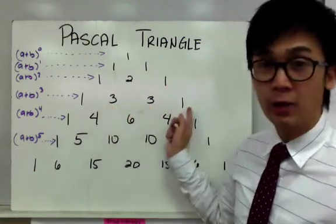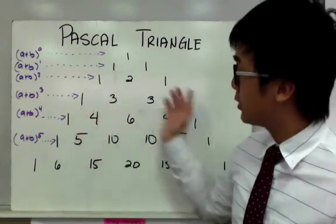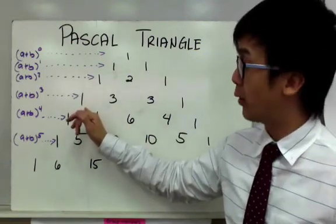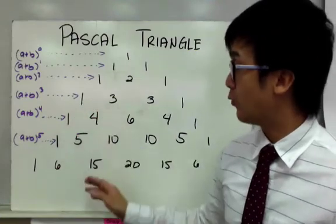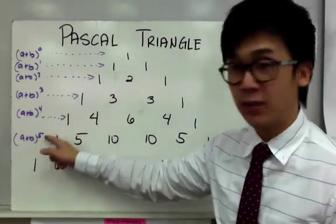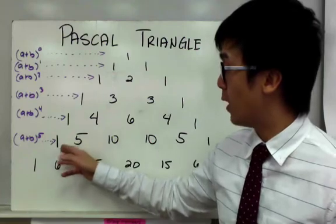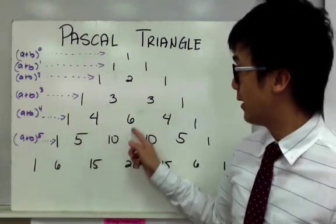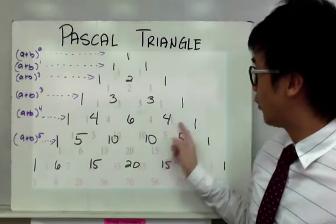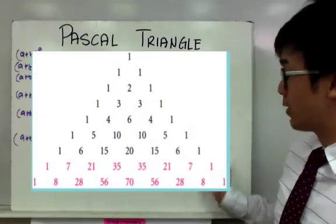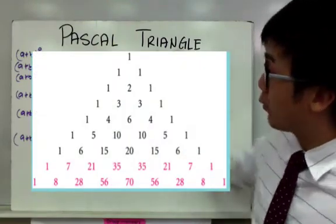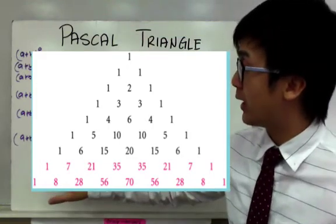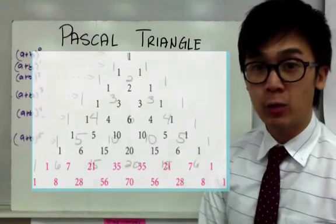So we have 1, 3, 3, and 1 — these numbers will be the numerical values that we multiply to our coefficients. And if we have a plus b raised to the fifth power, we have 1, then 1 plus 4 is 5, 4 plus 6 is 10, 6 plus 4 is 10, 4 plus 1 is 5, and then 1 at the end. This is how we build our Pascal's Triangle, which we will use in our binomial theorem expansion.